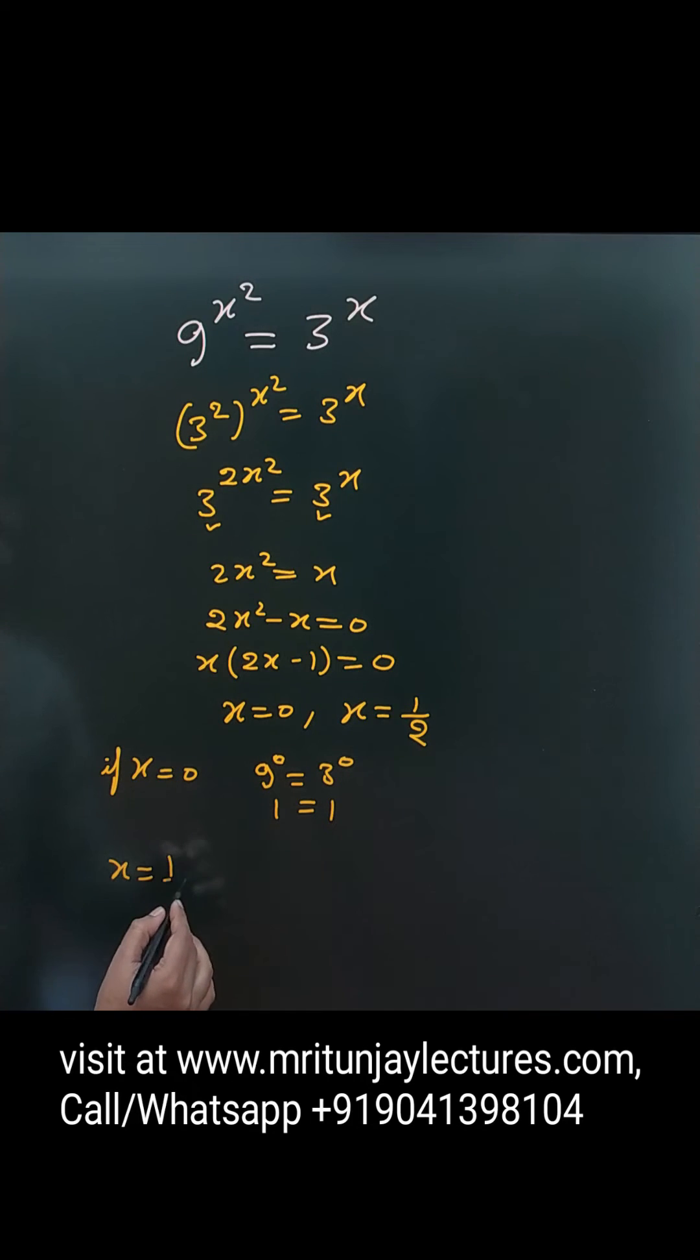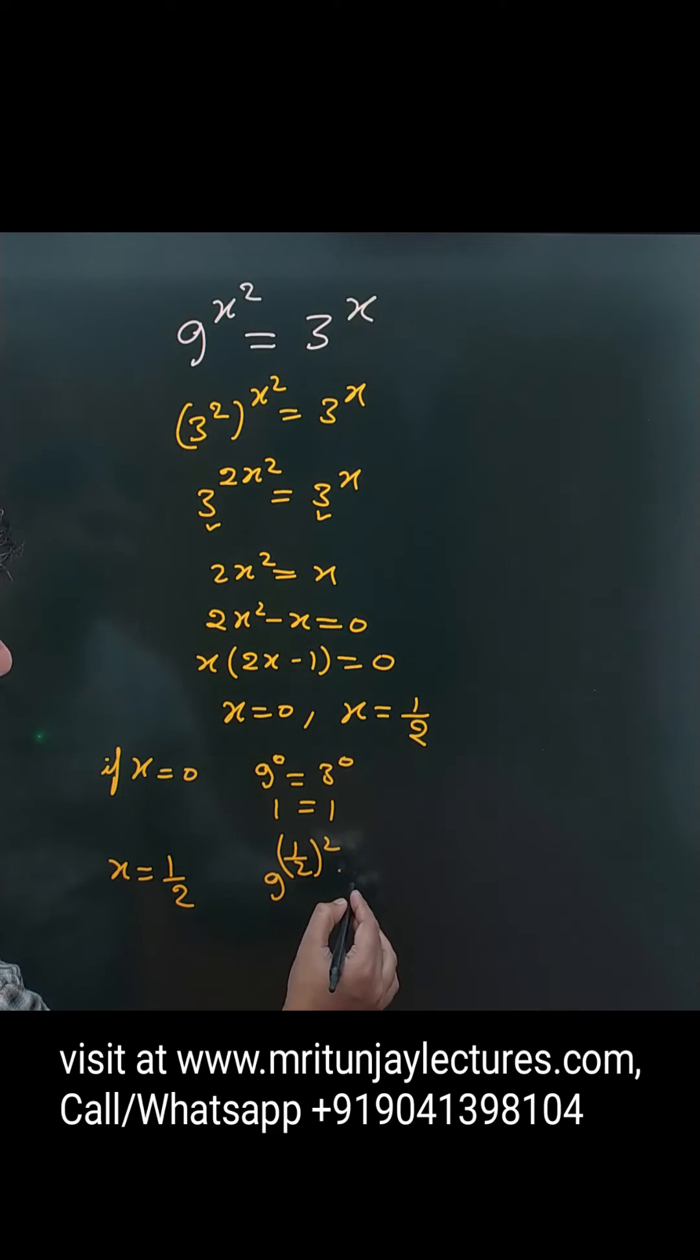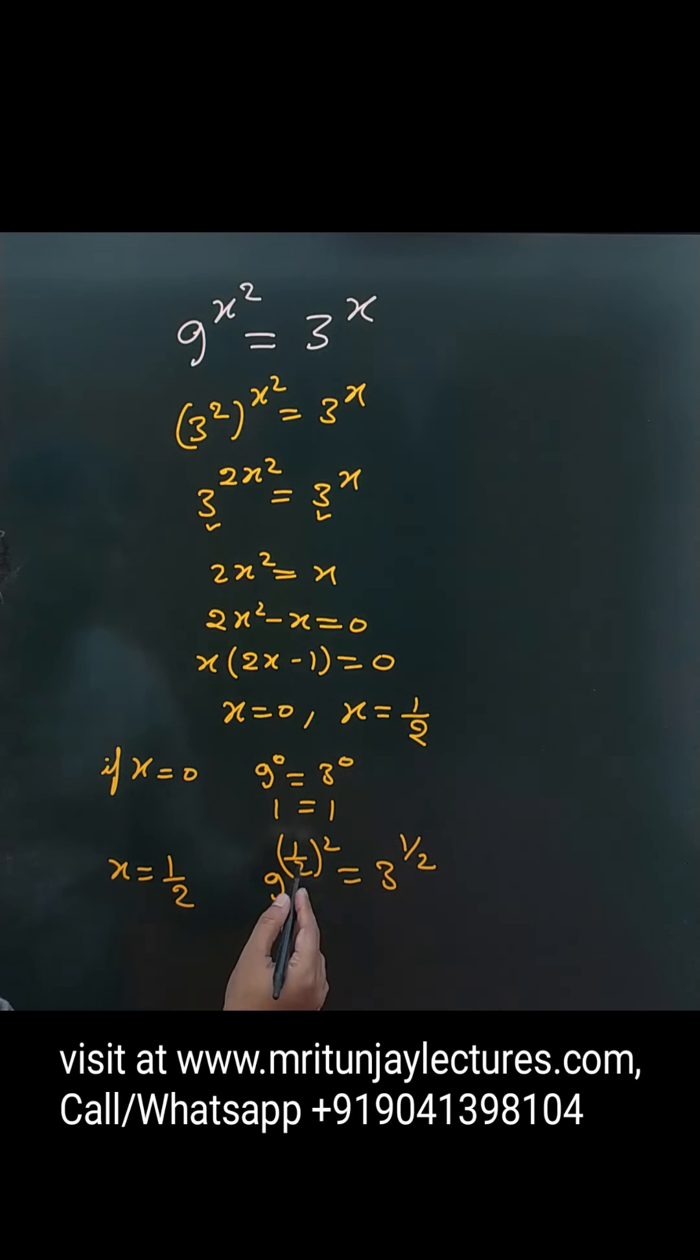Second case: if x equals 1 by 2, put here 9 to the power (1/2) whole squared, and here 3 to the power 1/2. What about that value? This one is written as 3 to the power 3 squared times 1 by 4.